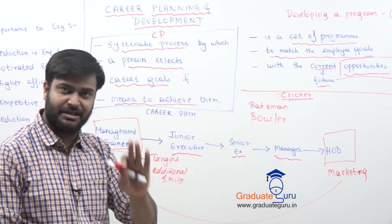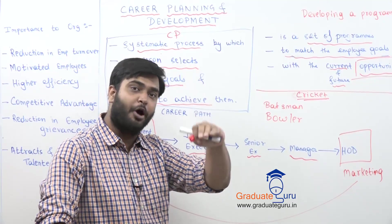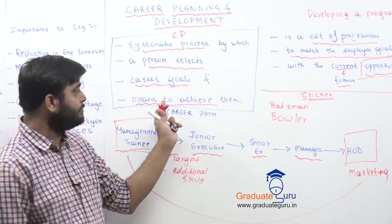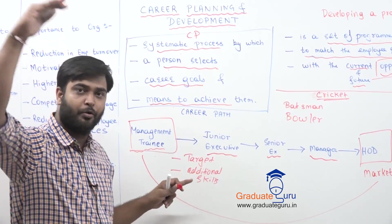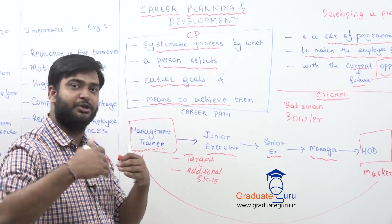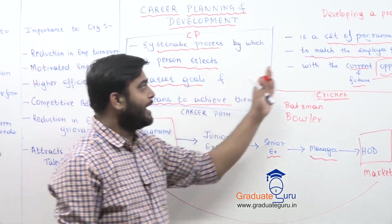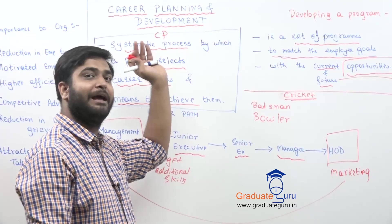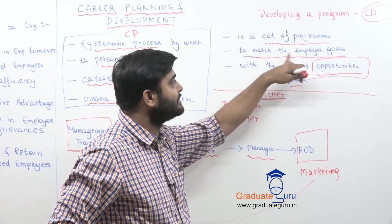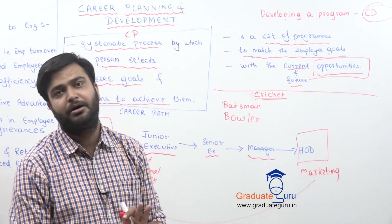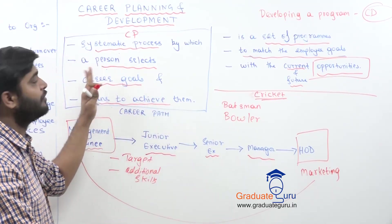So career planning is a systematic process by which the employee selects career goals and the means to achieve them - what targets to complete, what additional skills are required, what behavior, punctuality - all those criteria. And to achieve those goals, the organization enables the employee through a set of programs to match the employee goals with current and future opportunities. Are we clear with the definition of career planning and development?